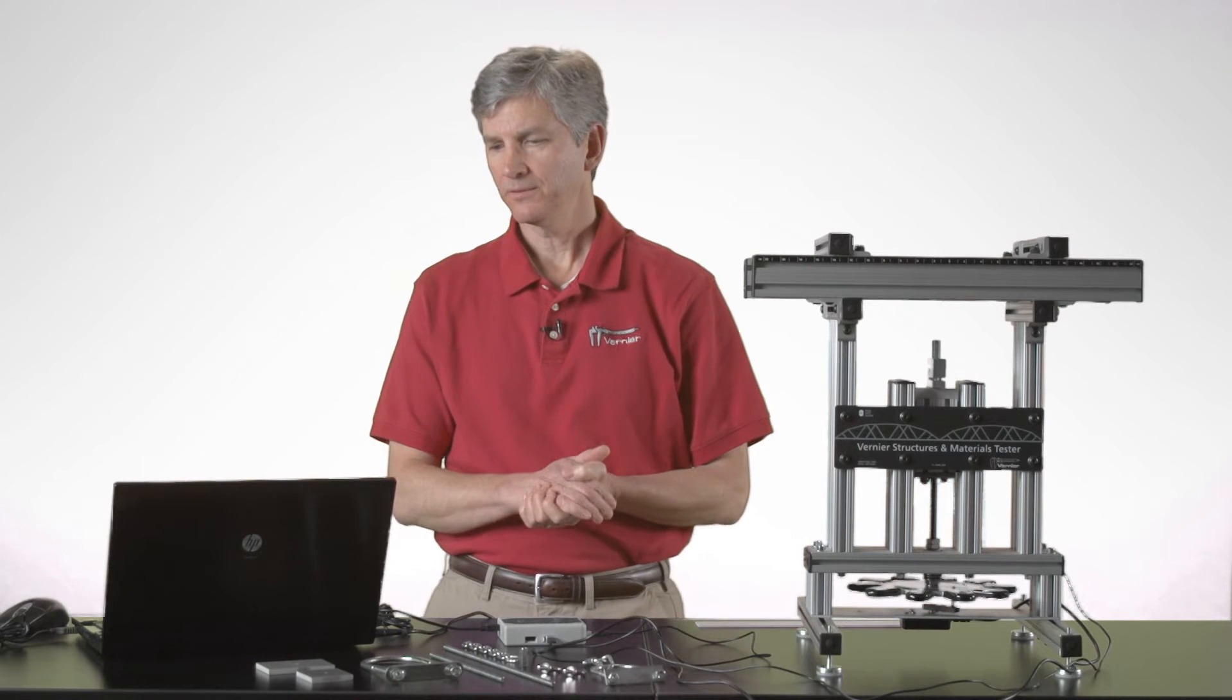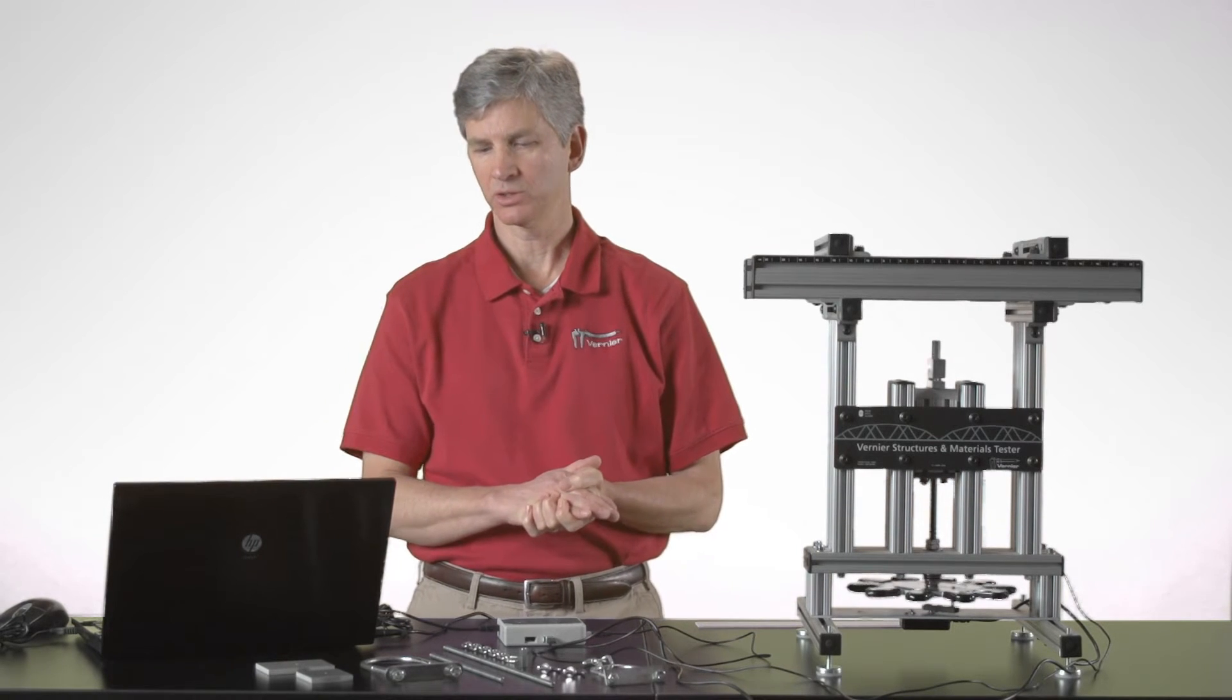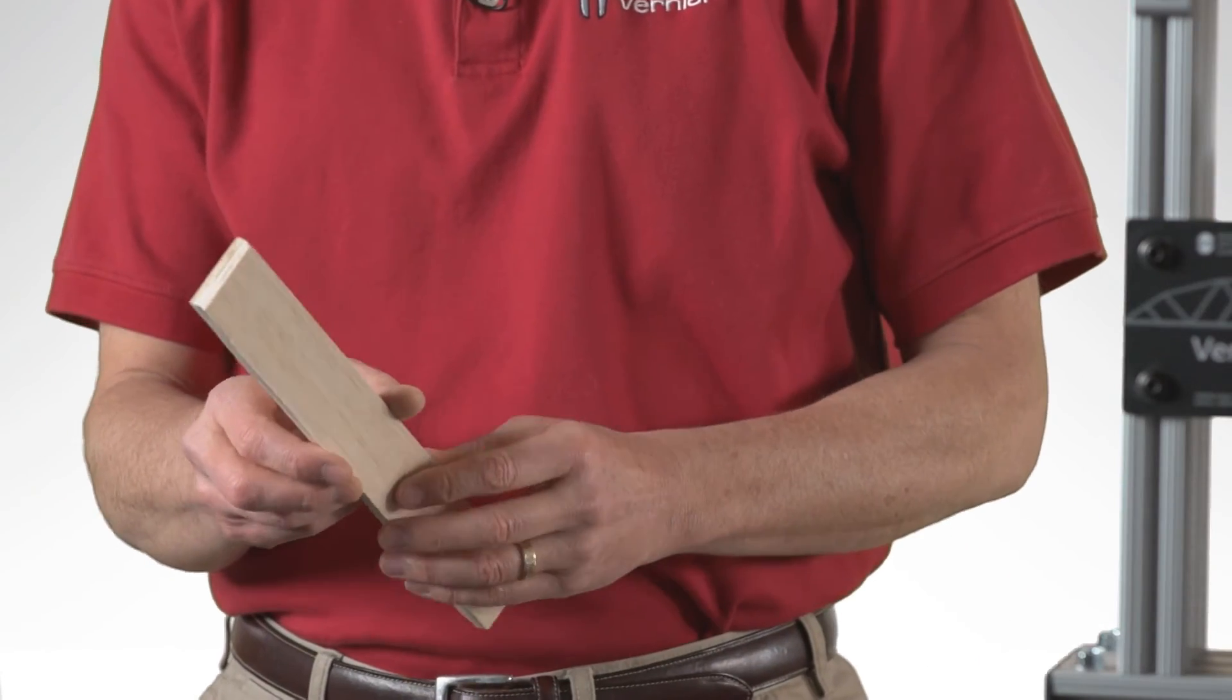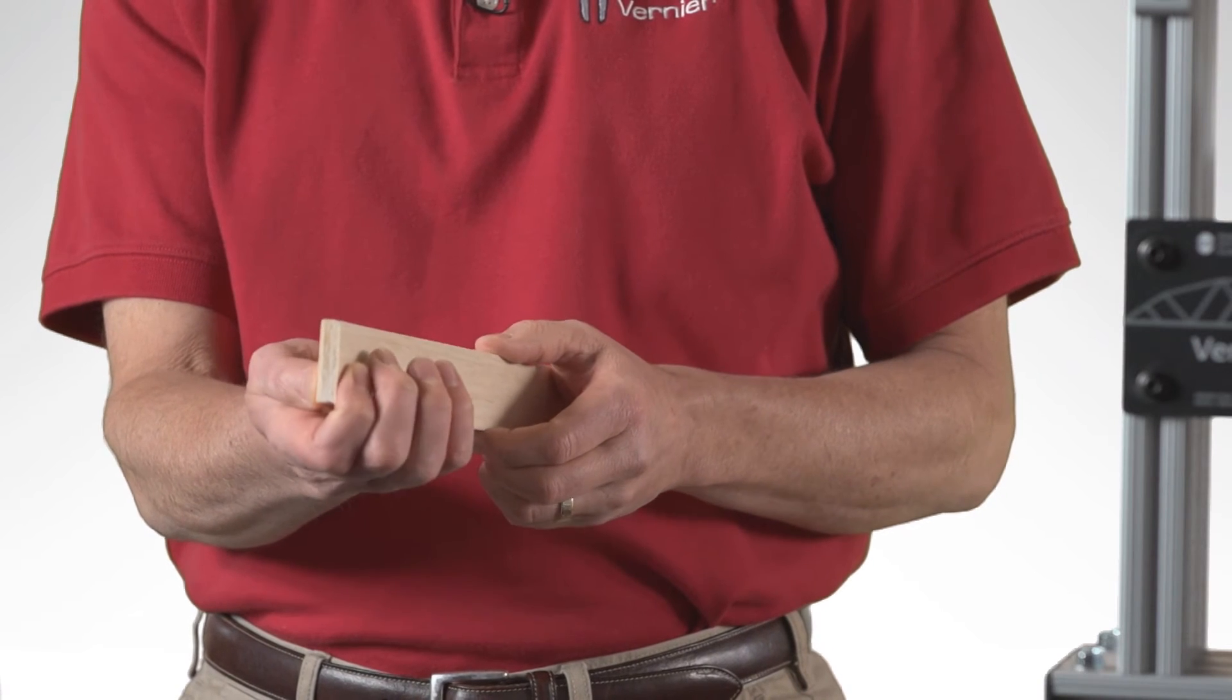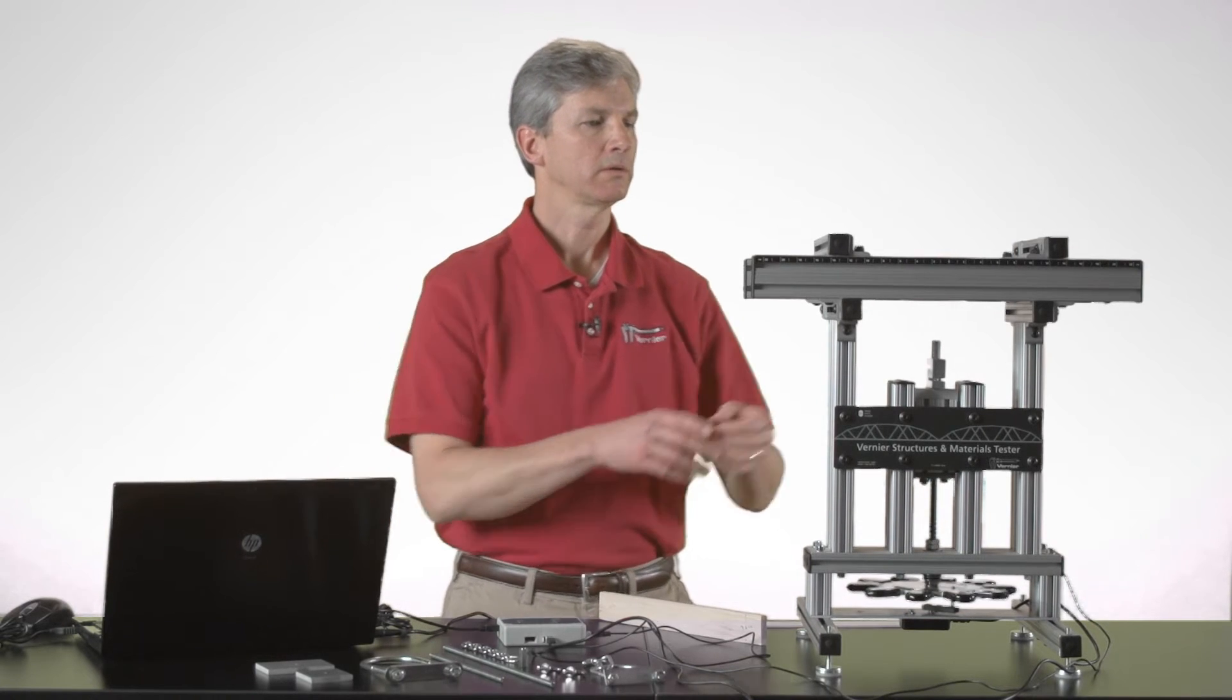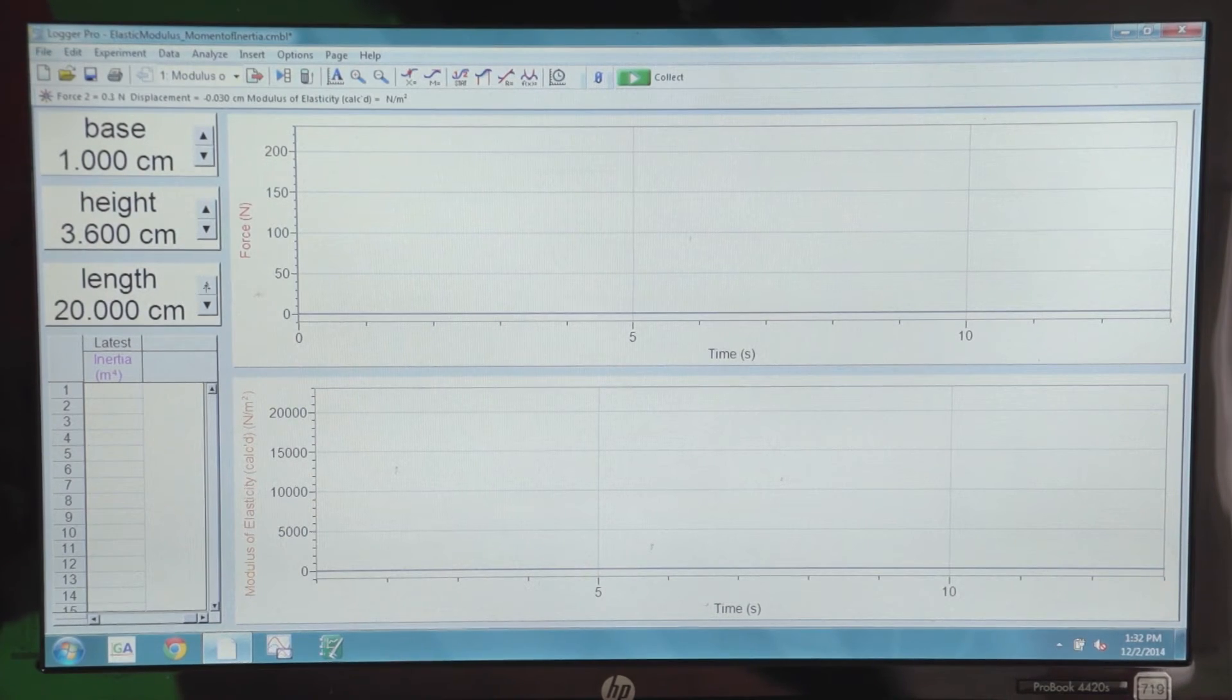In the experiment file, the first page that we have set up requires a few entry points for you to enter information about the beam that you're going to be testing. As you can see here, you're going to enter the base of the beam, the height of the beam, and the length of the beam. If I consider a rectangular beam, I happen to know that I've already entered data for the base and the height here. It's one centimeter in width and 3.6 centimeters high. I need to look at my supports to see how far apart the two supports are. And both of these start at 12 centimeters from the center. So I need to increase that to 24 centimeters for our length. There we are, 24 centimeters. All the data is input there.